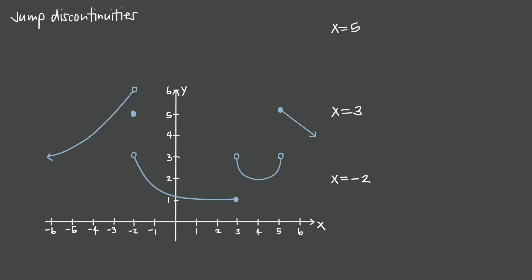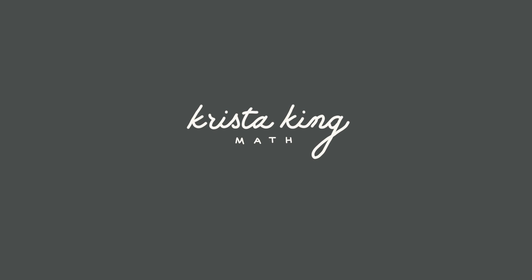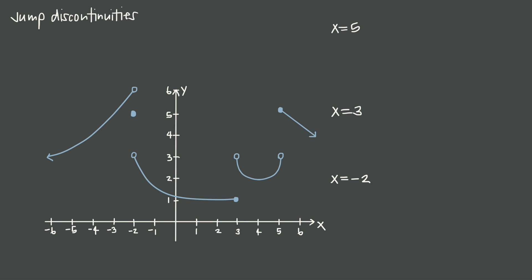There are lots of different types of discontinuities that can cause a function to be discontinuous at a particular point. In this video we're going to be focusing on jump discontinuities, which can also be called step discontinuities or discontinuities of the first kind. The important thing to remember about jump discontinuities is that they're just a big break in the graph — not just a hole, but a big gap.